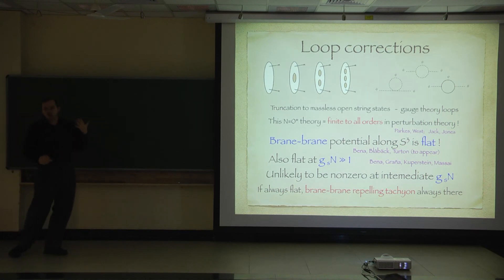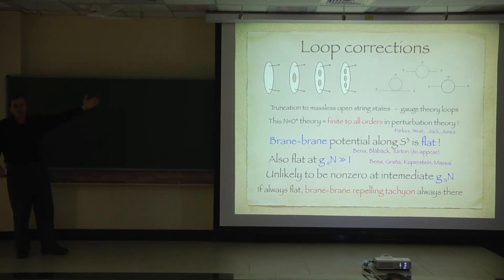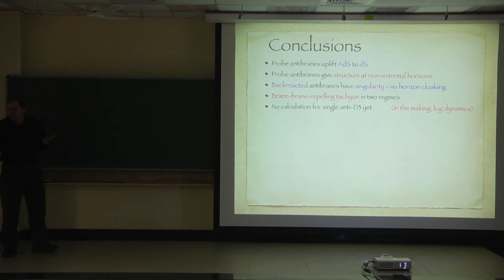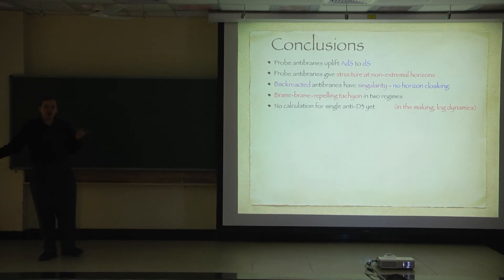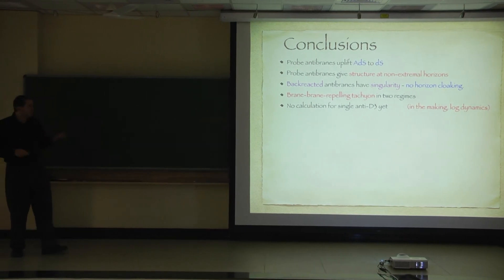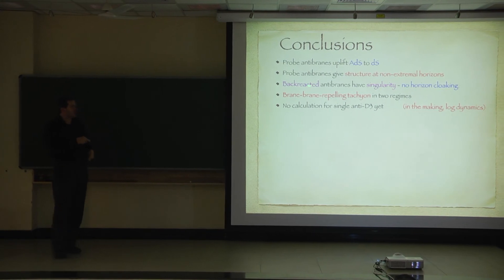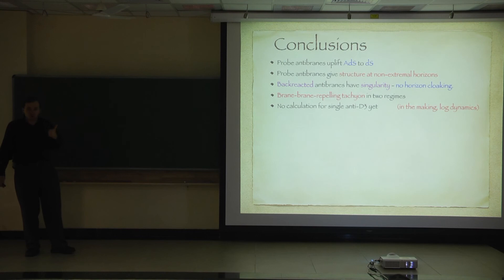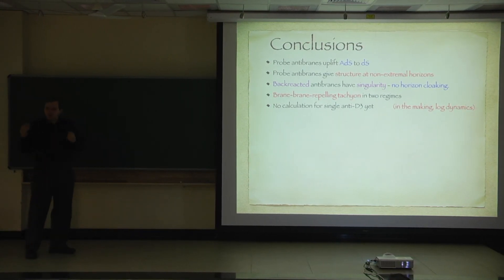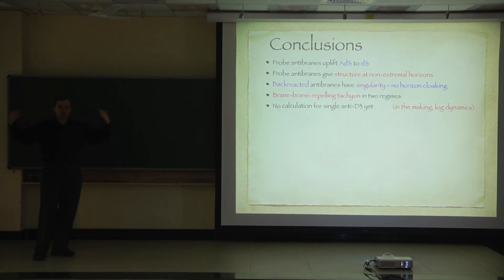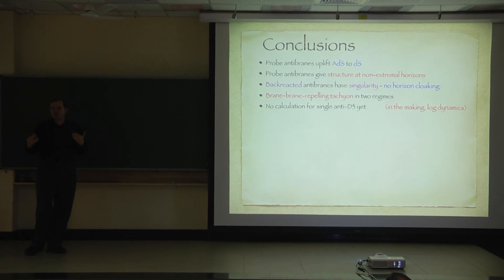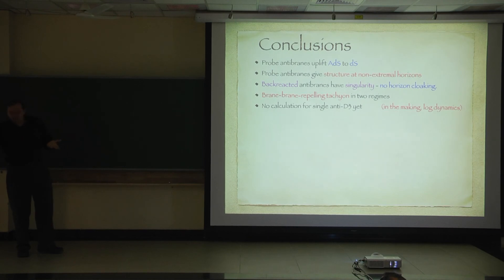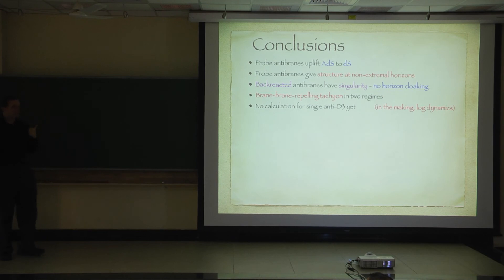This is the situation at this point. Probe anti-D-branes are the best hope we have for uplifting anti-de Sitter to de Sitter, and the best instrument for giving structure at a non-extremal black hole horizon. However, if you back-react the anti-D-branes, you get a singularity which you cannot cloak with a horizon. The singularity implies the existence of a brane-repelling tachyon, and we found this tachyon in two regions of parameters where we could do exact calculations. The only thing we don't have is a calculation for a single anti-D-brane, because this is a brane-brane repelling tachyon. Maybe a single brane is okay — it cannot run away from itself. The key ingredient is this log mode in Klebanov-Strassler, which implies there are low-mass modes that will mess up the physics even of a single anti-D-brane — but I don't have a calculation to show you.